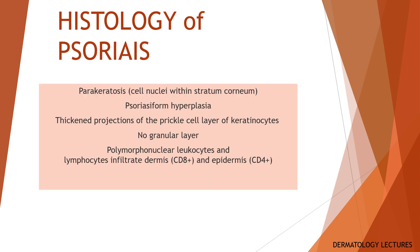Histology of psoriasis is characterized by parakeratosis and thickened projections of the prickle cell layer of the keratinocytes, that is psoriasiform hyperplasia. There is no granular layer. Polymorphonuclear leukocytes and lymphocytes infiltrate the dermis and epidermis.